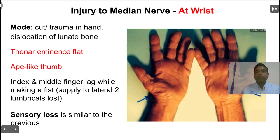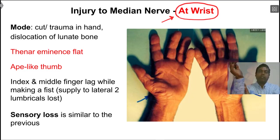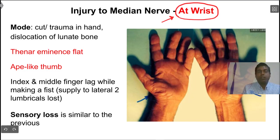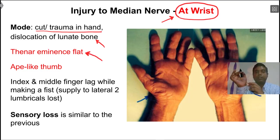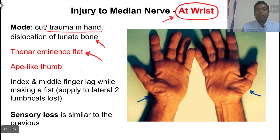If the median nerve is injured at the wrist, most of the long flexors in the forearm are already supplied and will be normal; the effect will be seen mostly in the hand. This injury can occur from trauma or a cut at the wrist where the nerve passes between tendons, or from dislocation of the lunate bone, as the median nerve is related just anterior to the lunate. In this case, the thenar eminence becomes flat, the thenar muscles lose supply, and there is an ape-like thumb.